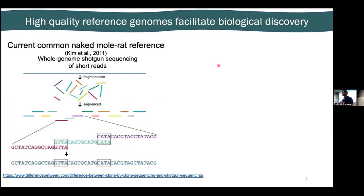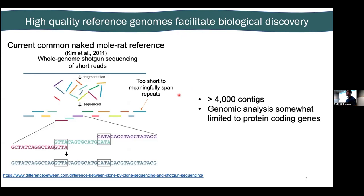One reason is because the current commonly used reference genome for the naked mole rat is based on whole genome sequencing of short reads. The issue is that short read-based assemblies produce reads and contigs that are too short to meaningfully span repeats. Rodent genomes tend to be about 40% repetitive, meaning the assembly is split into thousands of individual contigs, making genomic analysis in regulatory regions, structural variations, and duplications very challenging. Analysis is really best suited for coding regions.